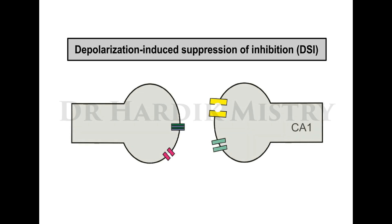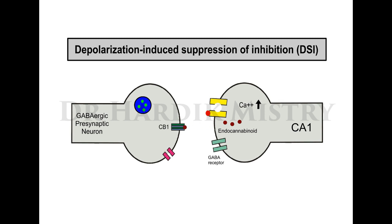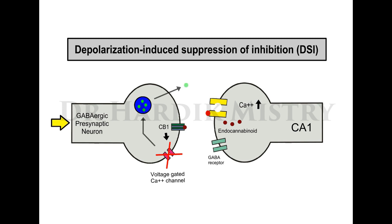Depolarization-induced suppression of inhibition (DSI): CA1 post-synaptic terminals also have synapses with GABAergic pre-synaptic neurons whose terminals contain GABA-filled vesicles — GABA is an inhibitory neurotransmitter. When calcium concentration increases in the post-synaptic terminal, endocannabinoids are released at the synapse. These bind with CB1 receptors on the pre-synaptic membrane of the GABAergic terminal. CB1 receptor activity blocks voltage-gated calcium channels, so calcium cannot enter the pre-synaptic terminal and GABA vesicles are not released. This maintains long-term potentiation for a longer duration.